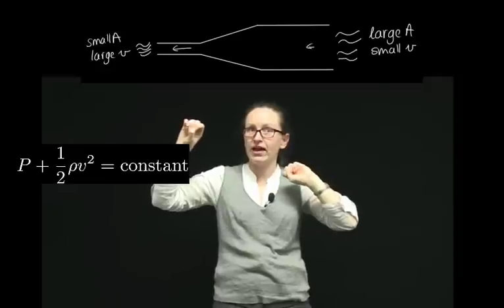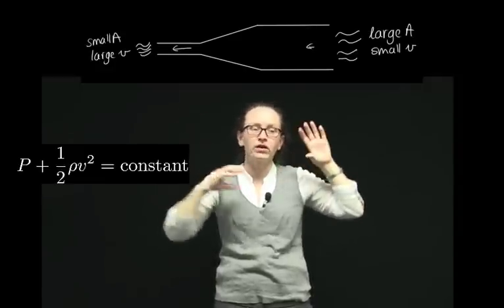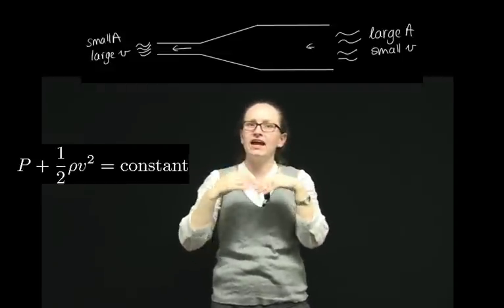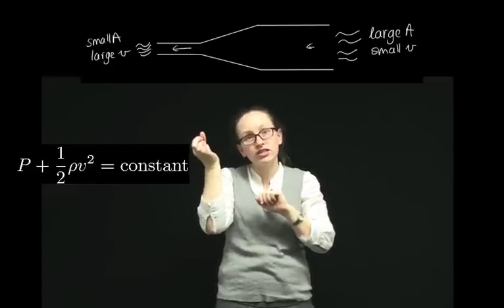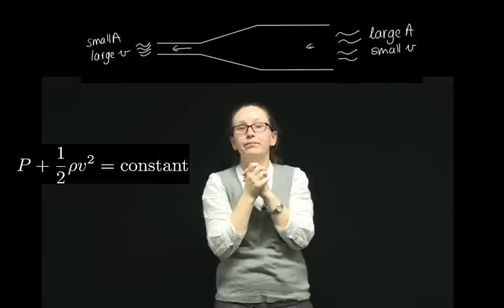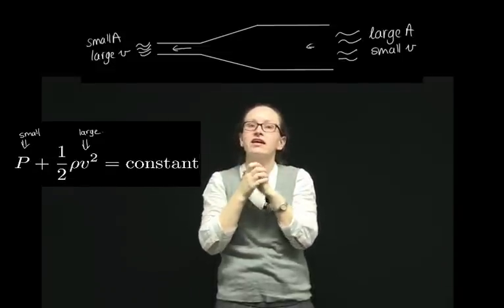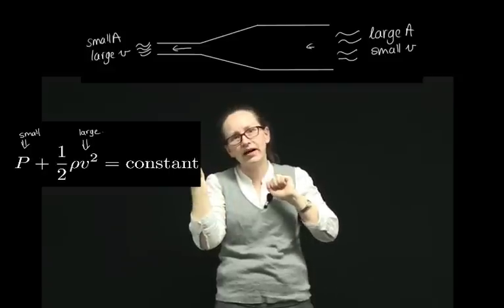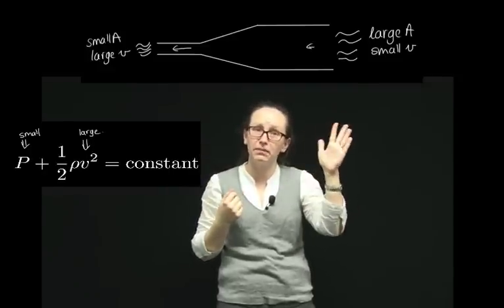So as A decreases, V has to increase. In the narrow pipe, the velocity is much faster than in the wide part of the pipe. And what Bernoulli's equation tells us is that therefore the pressure in the narrow part of the pipe must be lower than in the wide part of the pipe. Let's have a look at a demonstration to see if this really works.